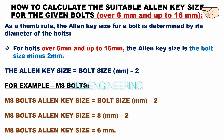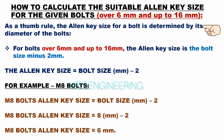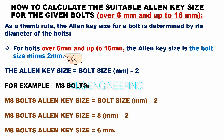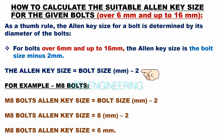We will understand how to calculate the suitable allen key size for bolts over 6 mm to 16 mm. As a thumb rule, the allen key size for a bolt is determined by its diameter. For bolts over 6 mm and up to 16 mm, the allen key size is the bolt size minus 2 mm. The formula is: allen key size = bolt size (mm) − 2 mm.